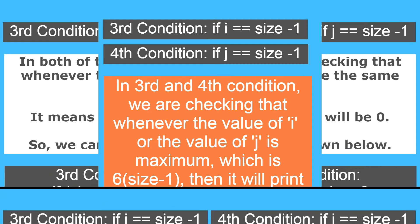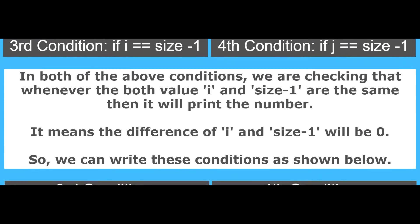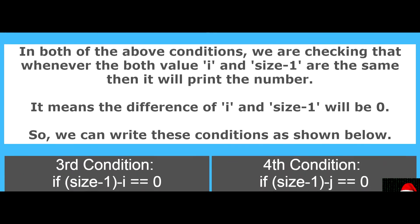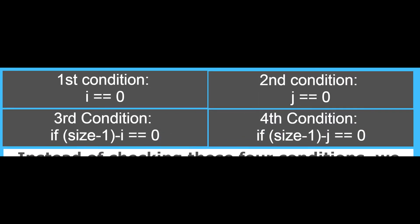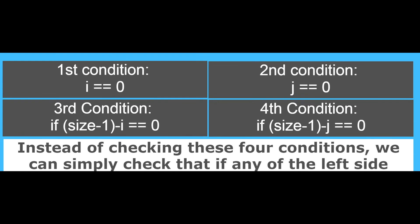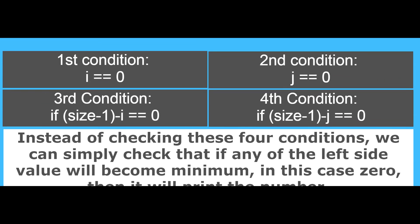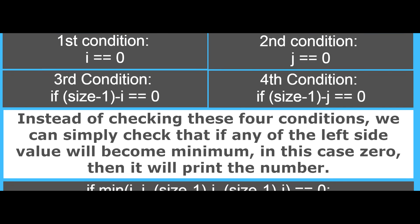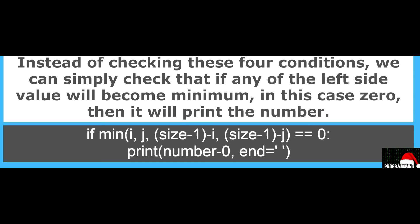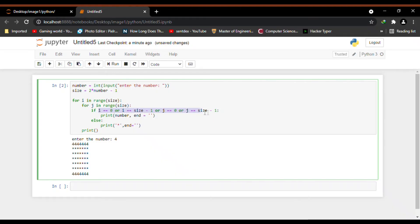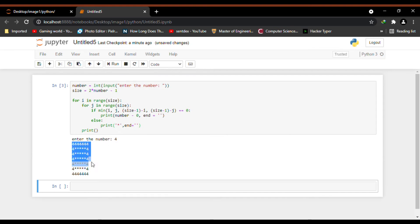Let's analyze the third and fourth conditions in detail. In both conditions we check that whenever i and size minus 1 are the same, i.e. their difference is 0, we print the number. So we can modify all four if conditions so that whenever any of the left-side values become 0 we print the number. Instead of checking four conditions individually we can simply check if the minimum of those four values is 0. Let's make this change in the code and run it — we get the outer square.